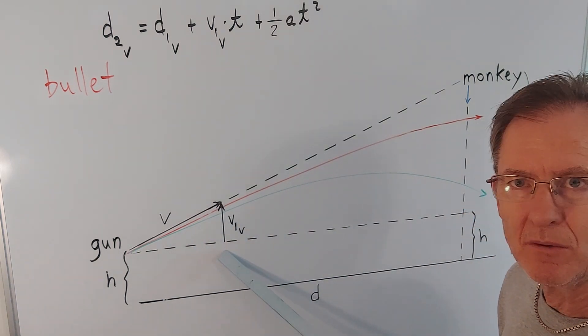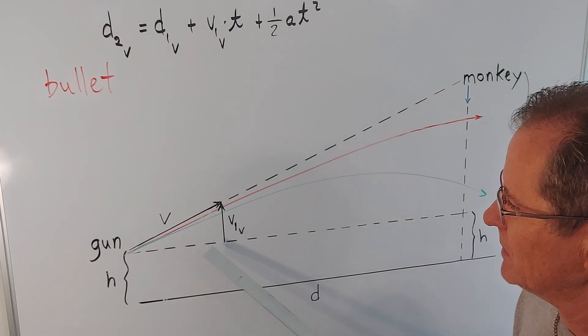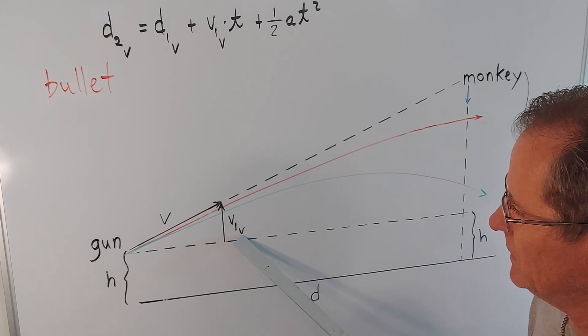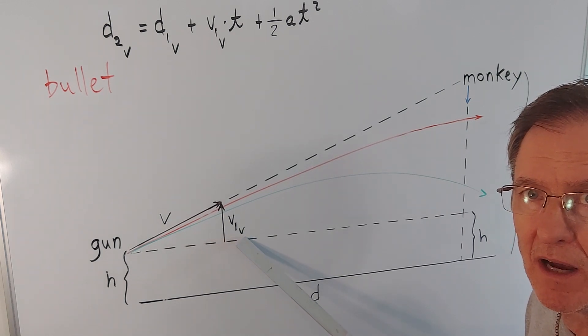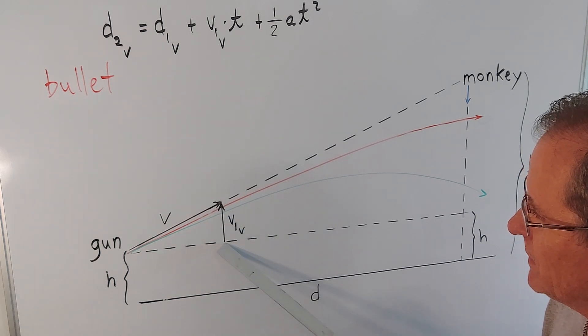This then is the vertical component of the original velocity, as we talked about in a previous video. I'll call it V1 vertical. It changes immediately due to gravity. It decreases, but originally it was represented by this vector right here.